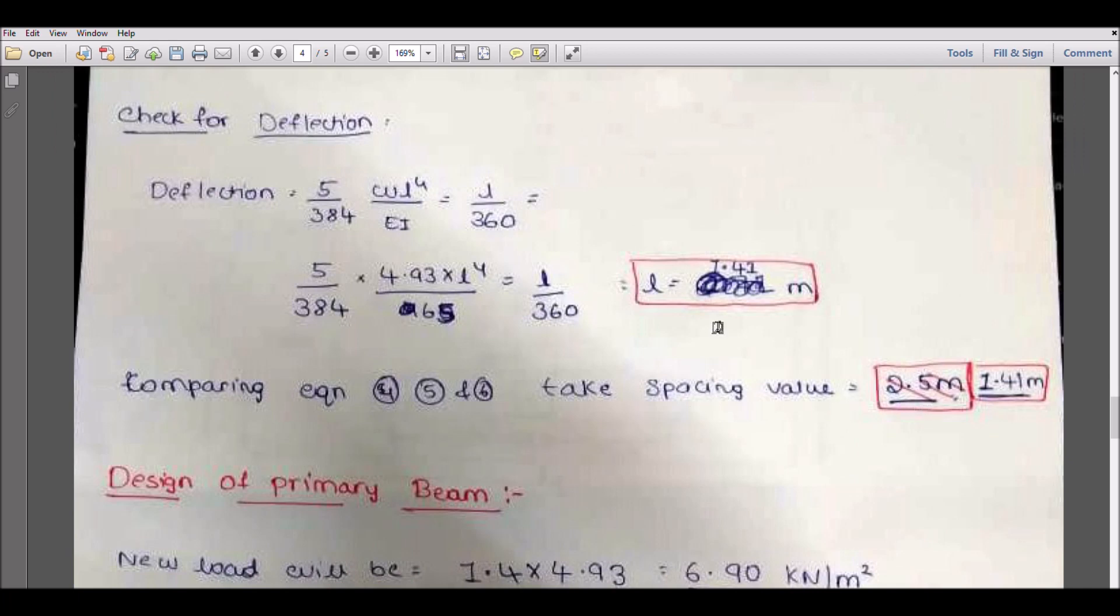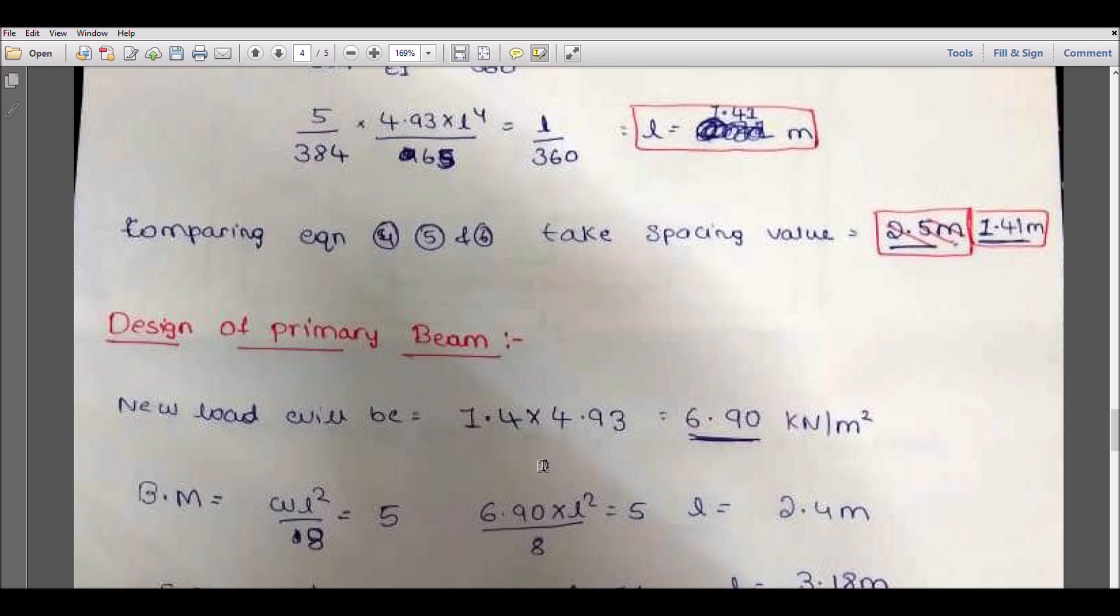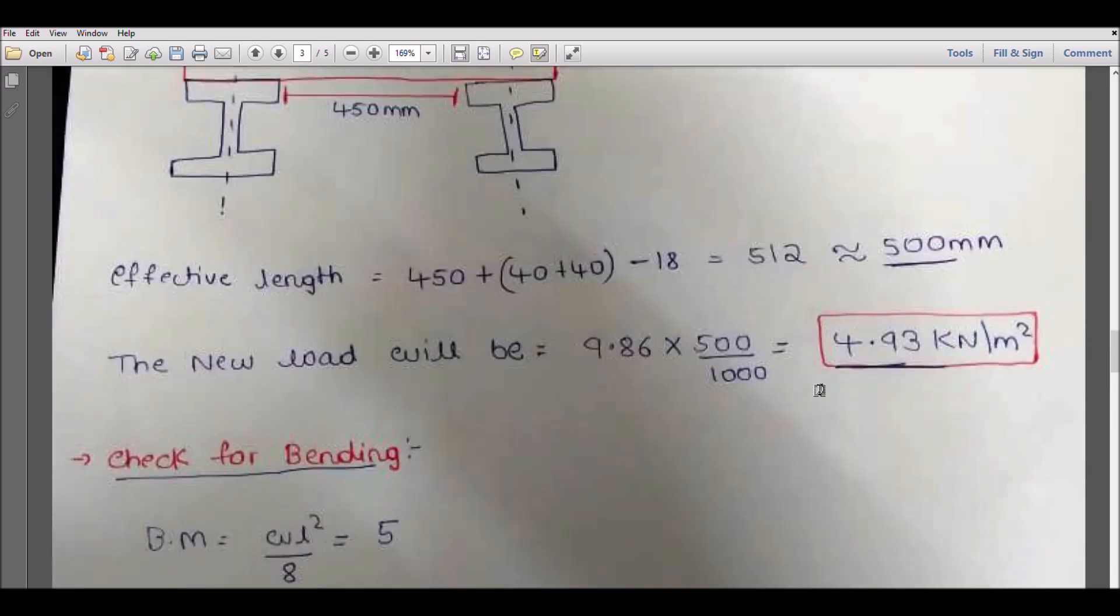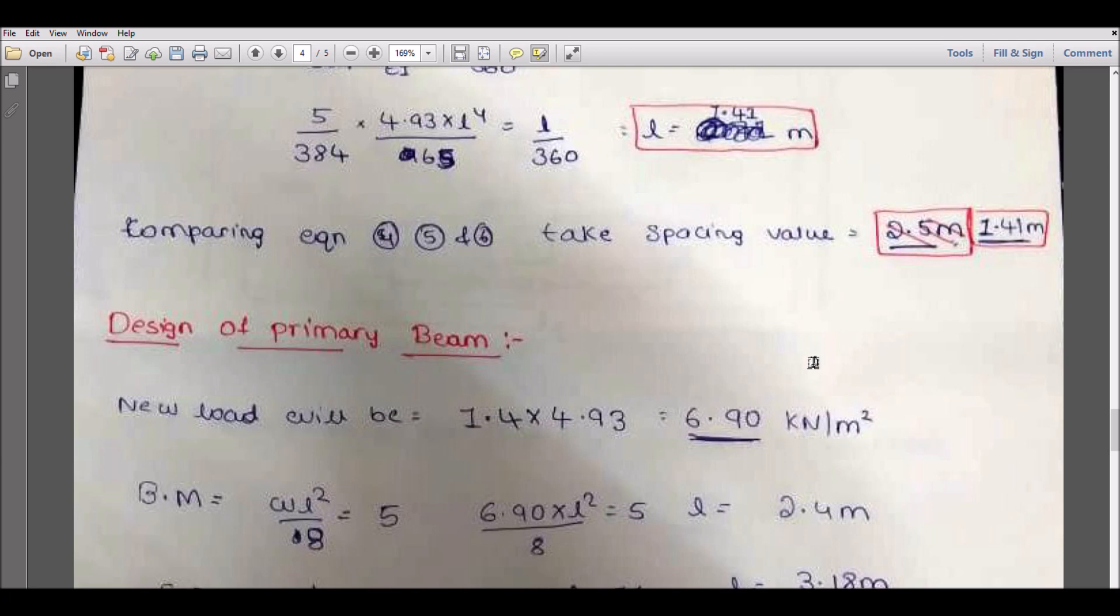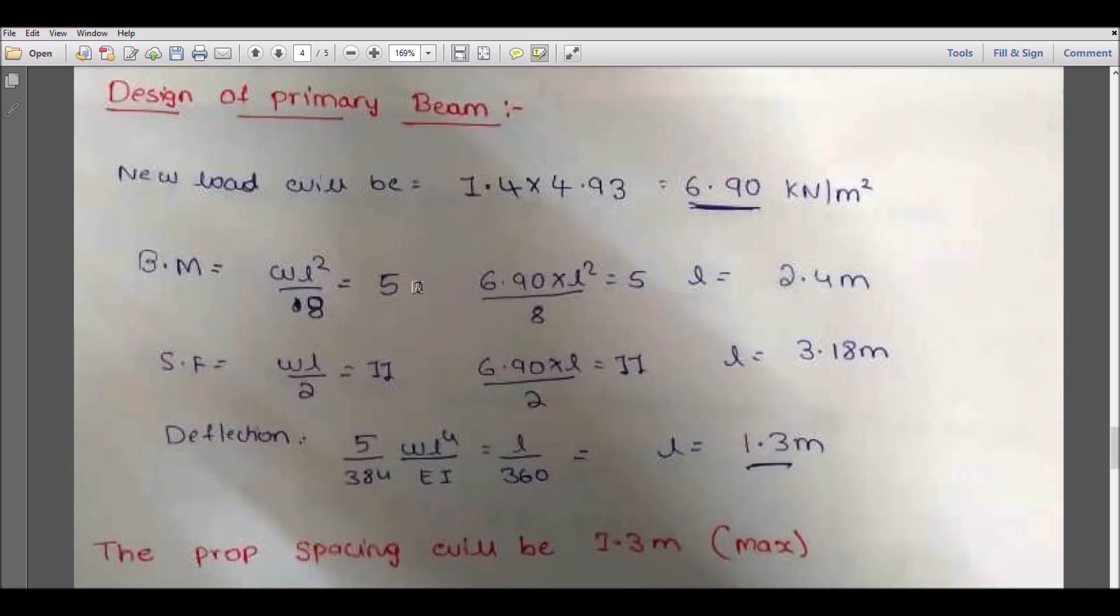Comparing the minimum, this one you have to give the spacing for that primary beam. Next, we will go for the design of the primary beams. First, we have to distribute the load as previously we did. Now our new value is 1.41. I am multiplying the 4.93. Where is this 4.93? 4.93 is nothing but the previous distributed value. So now we got the new value as 6.9. This value we'll take again as W. Why is this again 5? Because in the primary beam I am considering same timber beam as a primary beam, so my values don't change: 5, 11, and these values won't change.